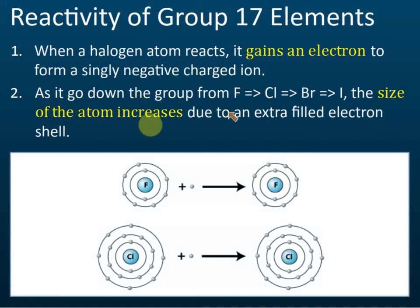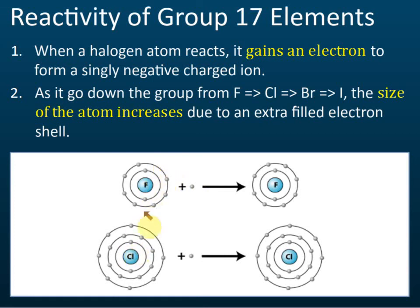As you go down the group, the size of the atom increases due to an extra filled electron shell. Comparing fluorine and chlorine — both have seven valence electrons, but chlorine is much larger than fluorine. When they react, they attract electrons to their outermost shell.